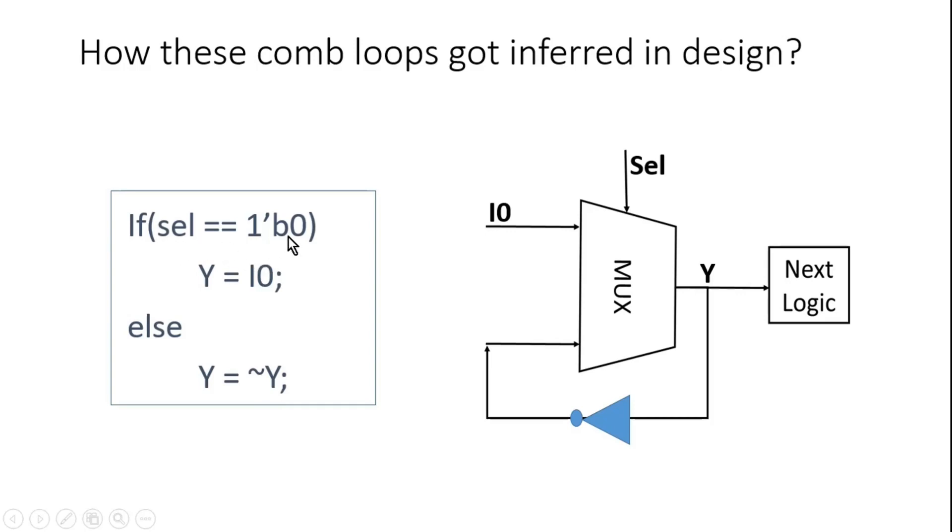If select line is equal to 0, y should get the value of i0, just like in the previous example. Else when select line is 1, y should get the negative of its previous value. So here a NOT gate will be introduced. This NOT gate is the only difference in the previous example and in this example.